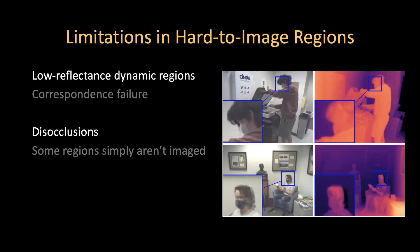Our method is not without limitations. In particular, low-reflectance dynamic regions remain difficult to recover, even with data from a time-of-flight camera. Further, for disoccluded regions of the scene that are not observed in any of the input images, we fail to produce plausible view synthesis results, sometimes leading to minor ghosting artifacts.